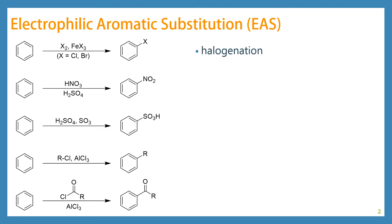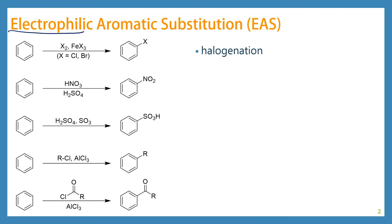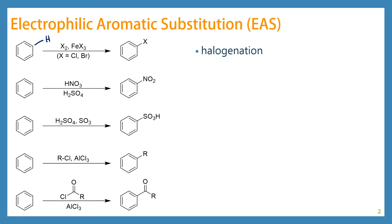First, we have halogenation, which is taking our benzene molecule and adding on a single halogen atom. One of the interesting things you should note about this is that this is called electrophilic aromatic substitution. Notice that there is not an addition happening, which is what we usually see with an alkene. Instead, what we're seeing is that a hydrogen atom that used to be here has been substituted by something different.